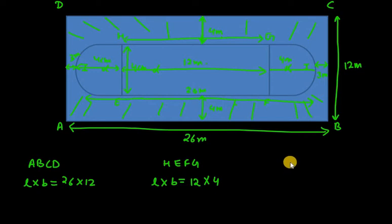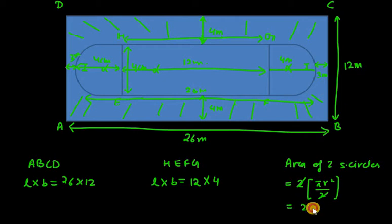Now, we have to find the area of 2 semicircles. Area of 2 semicircles is equal to twice of pi r square over 2. You can cancel out 2 with 2. So pi as 22 over 7 r square. R in this case, r of semicircle is, if diameter is 4, then r will be 2 centimeter.